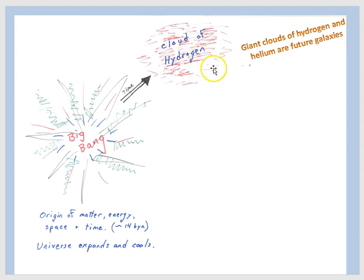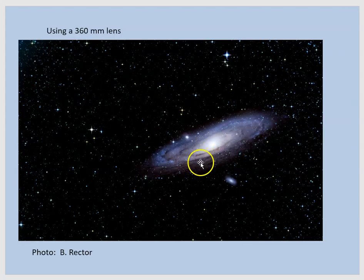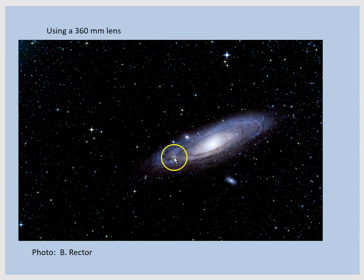Now, these giant clouds of hydrogen and helium are going to be future galaxies. Today, we know of galaxies as these beautiful structures out in space, composed of hundreds of billions of stars. So we can think of a galaxy as a collection of stars. So now we need to understand how the first stars formed.